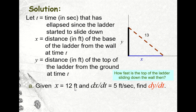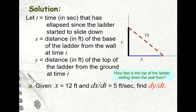Given: x equals 12 feet, as stated in the problem, and dx/dt — the rate at which the distance x is changing with respect to time — is equal to 5 feet per second. So the bottom of the ladder is sliding at 5 feet per second. We are asked to find dy/dt, the rate at which the top of the ladder is sliding down the wall.